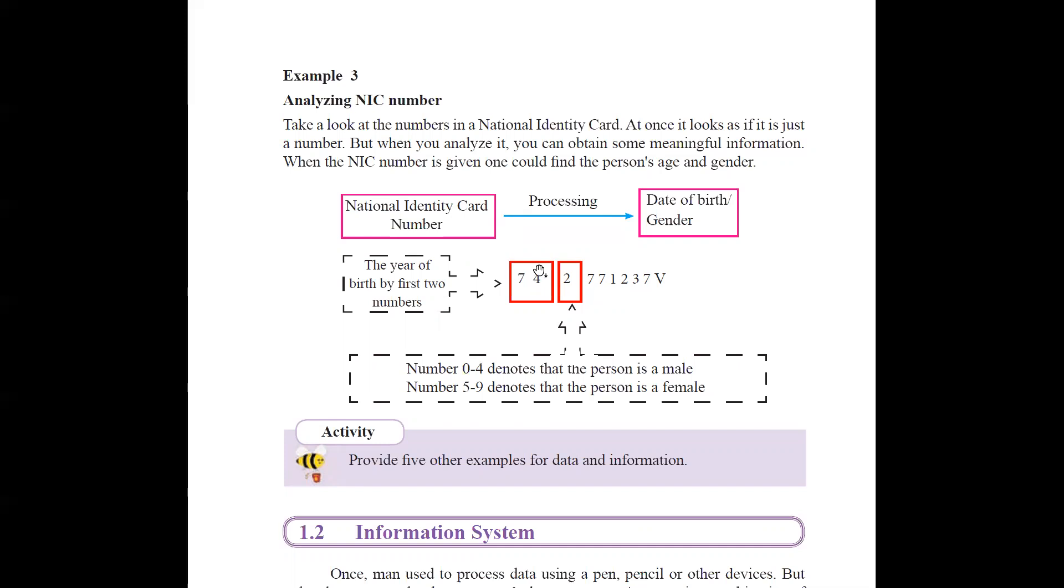For example, if you think about the first two digits, it's the birth year. So this person had born in 1974. And two denotes he is a male, that means zero to four denotes it's a male. So as this is two, this person is a male, you can decide the gender also.